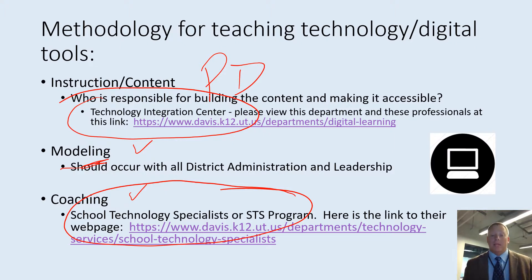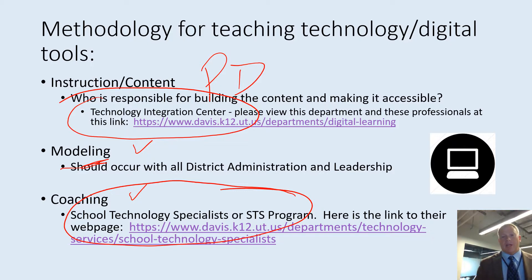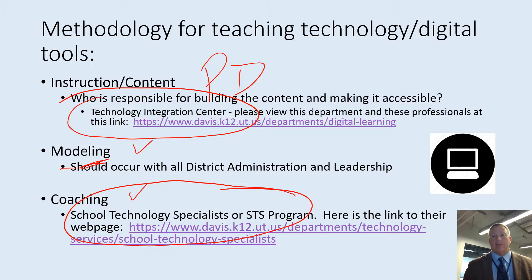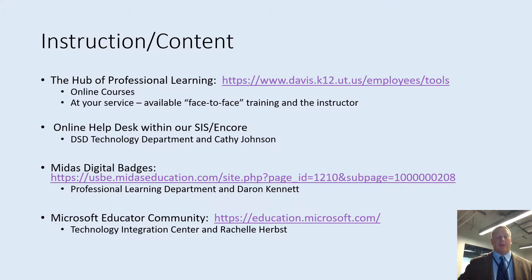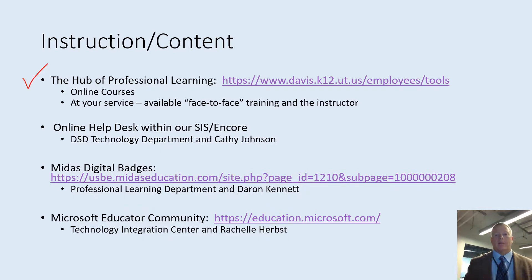Our model: we have one STS for every two elementary and junior high schools — so it's a two-to-one ratio. And then in our high schools, we have one STS or coach for every high school. So let's talk more specifically about how we get support to teachers, departments, and schools. The first way is through what we refer to as our hub of professional learning.